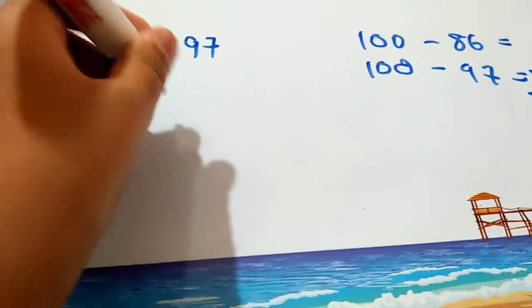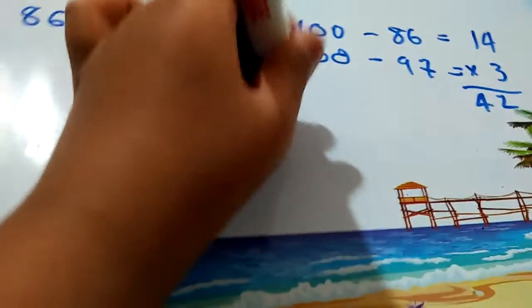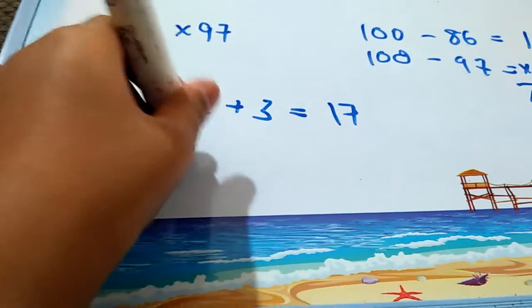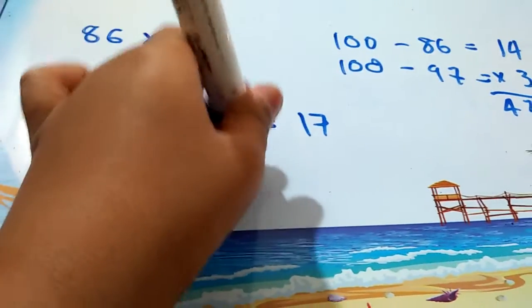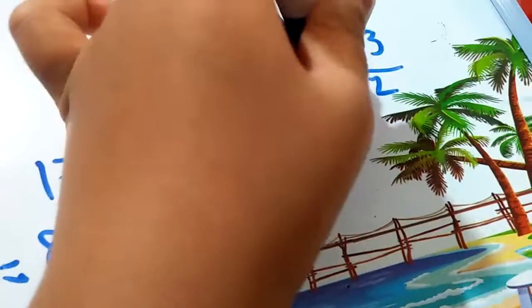Then add 14 and 3 together, you will get 17. Subtract 17 from 100, you get 83, and put the 83 next to 42 to get the product.